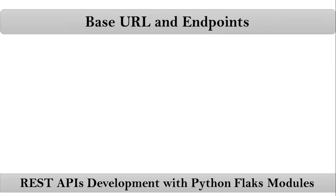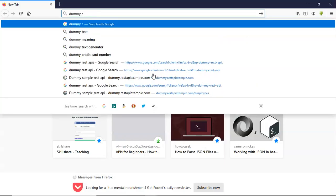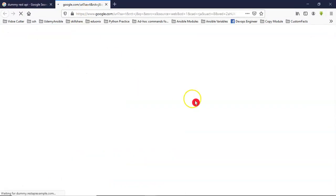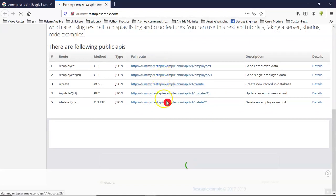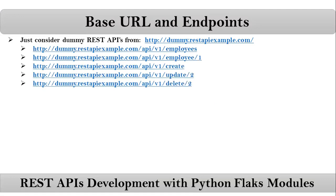First, let me go with base URL and endpoints. To explain about base URL and endpoints, I am considering dummy REST APIs from a website. Just open your browser and search for dummy REST APIs list, open the first URL, scroll down, and you will see a list of available REST APIs for a dummy application.